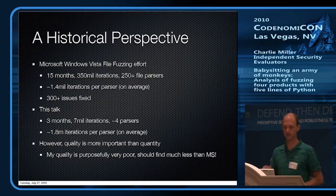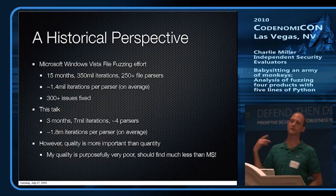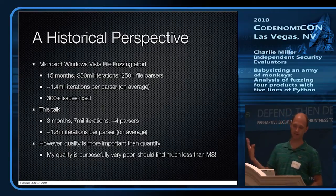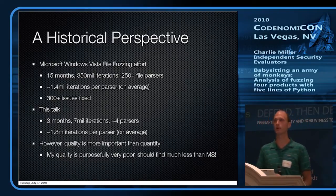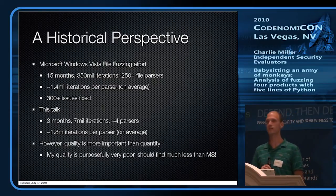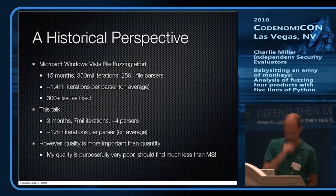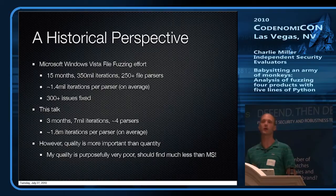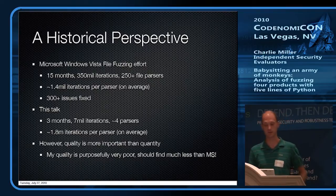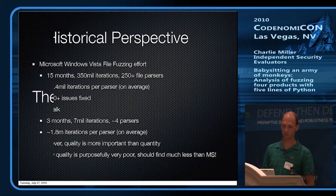My talk: I fuzzed for three months, four things — Adobe Reader and Preview for PDF, and OpenOffice and PowerPoint for PPT files. Four things, three months, seven million iterations, working out to 1.8 million iterations per target — roughly in the same ballpark as Microsoft, except it's just me and my four computers. Microsoft probably put a lot of effort into making high-quality test cases, and I didn't. I chose the most brain-dead approach and still actually found some stuff.